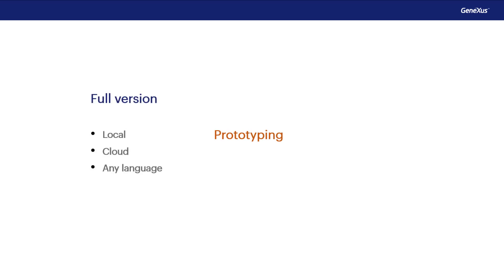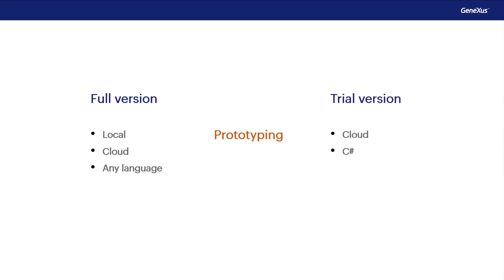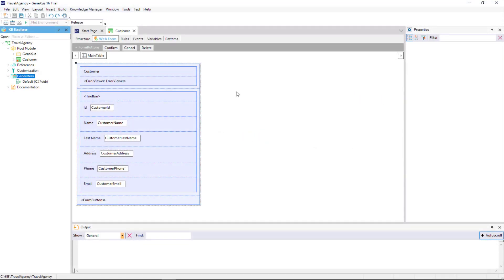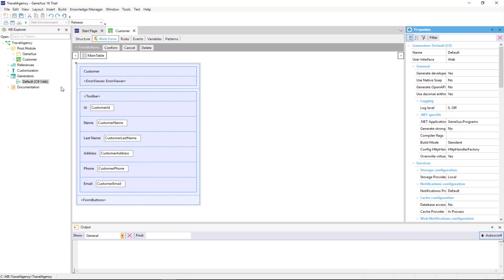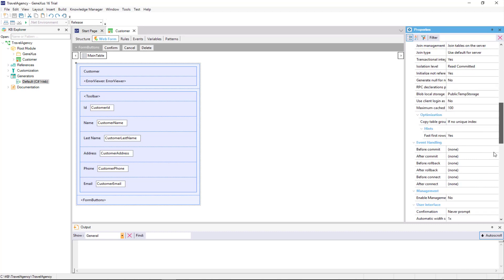The full version of GeneXus allows prototyping an application locally, that is to say, the programs and the database will be hosted on our network servers, and also in a cloud that is available to GeneXus users. In addition, we can prototype in any of the programming languages supported. On the other hand, the trial version only allows prototyping in the cloud and in C-sharp language. We can see it here by opening the Properties window and confirming that we can only prototype in the cloud.